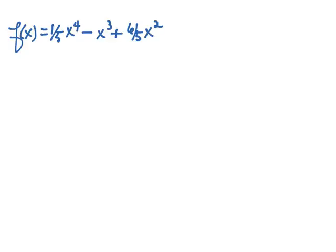We want to apply what we've learned about the leading coefficient test, finding a function's zeros and multiplicity, to come up with a quick sketch of f of x equals one-fifth x to the fourth minus x cubed plus six-fifths x squared.